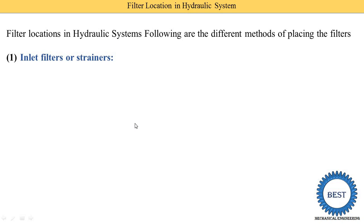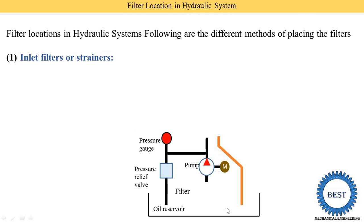The first location is the inlet filter or strainer. Inlet filter means filters are provided at the inlet to the hydraulic system, which is the suction pipe of the pump. Here you can see the oil reservoir and the pump. At the inlet of the pump we provide the filter, shown by a diamond square symbol with a dash line inside. The strainer is generally provided at the bottom part of the suction pipe.